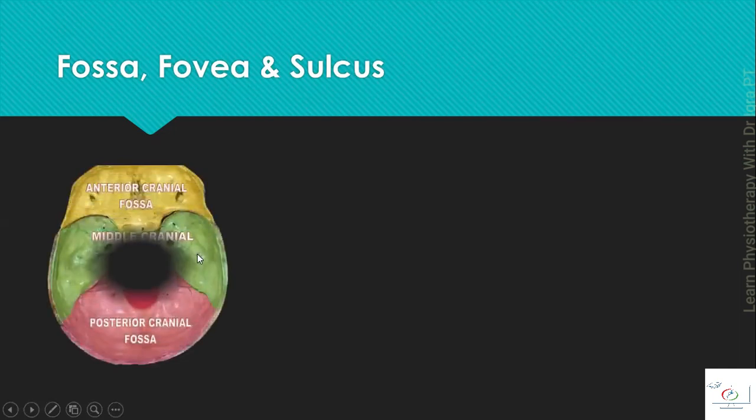They are named further according to the attachments or the location where they are present. For example, the anterior cranial fossa, the middle cranial fossa, or the posterior cranial fossa. Fossa is a deep depression, and they are named because they are present in cranial bones and on the basis of their position: anterior, middle, and posterior.